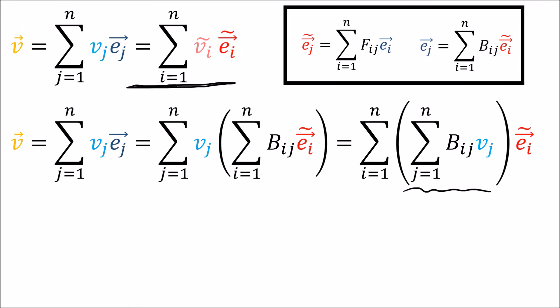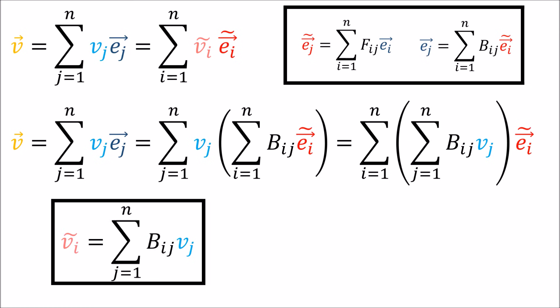So what's this part in the middle? Well, if you look up here, when we write V as a summation of new basis vectors, the coefficients have to be the new components, V tilde. So this here is equal to V tilde. So we've proven here that to move from the old components to the new components, we actually use the backward transformation, which is what we expected.